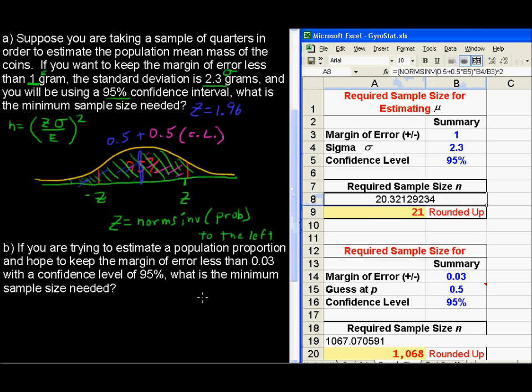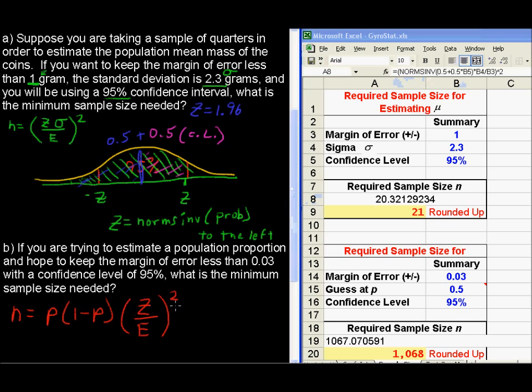Part B is going to go a little bit faster because I've already talked through the NORMSINV. All I want to show you here is the formula for the sample size needed for a proportion. That is n equals the proportion in mind times 1 minus the proportion times the z-score over the margin of error. And just this part is squared. Just the z over e is squared.